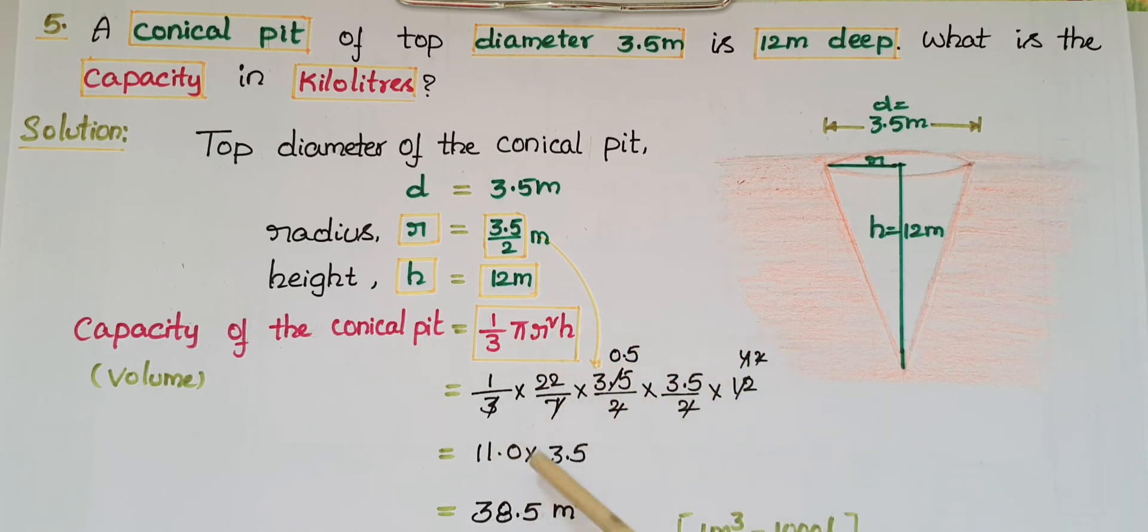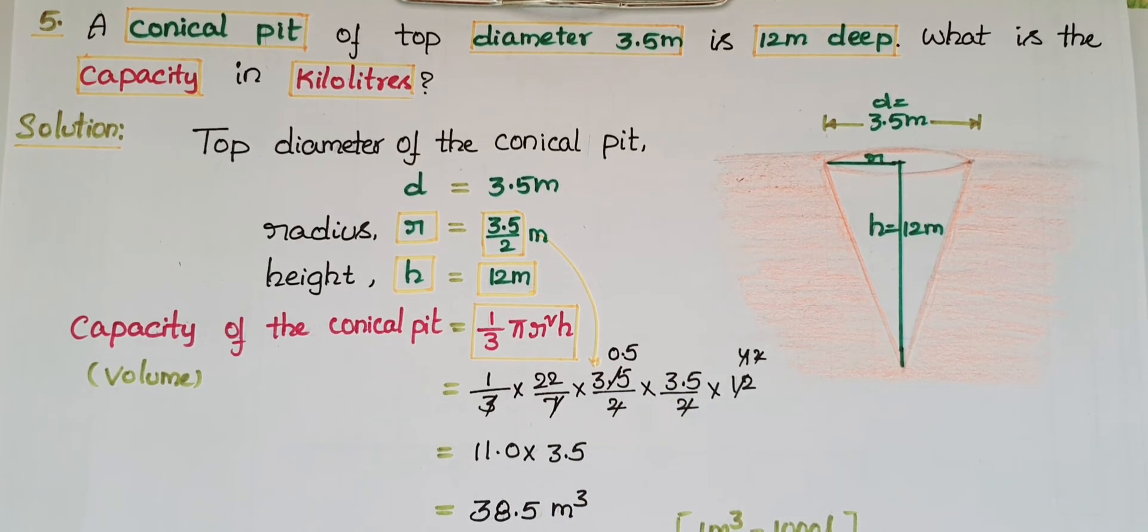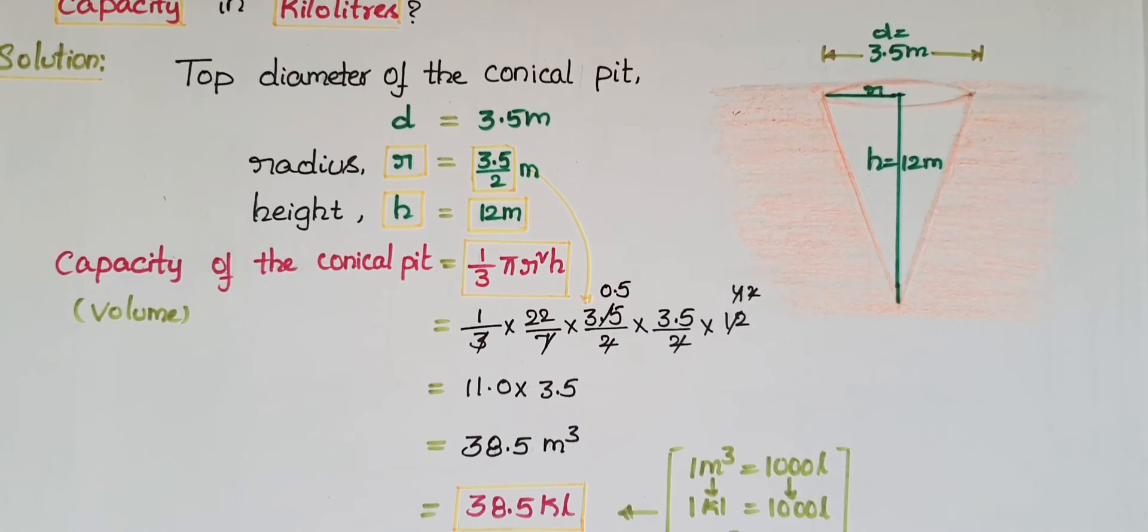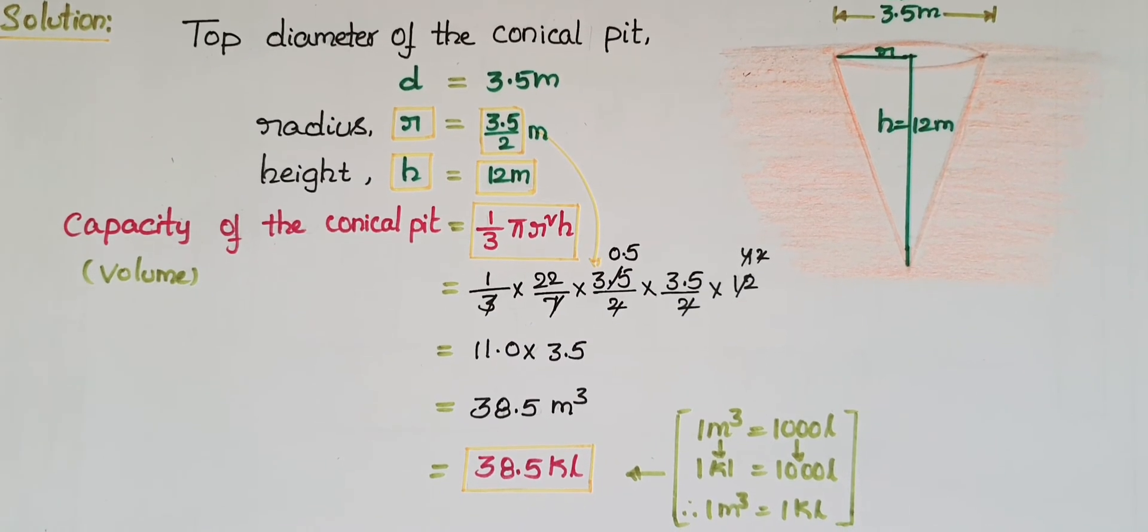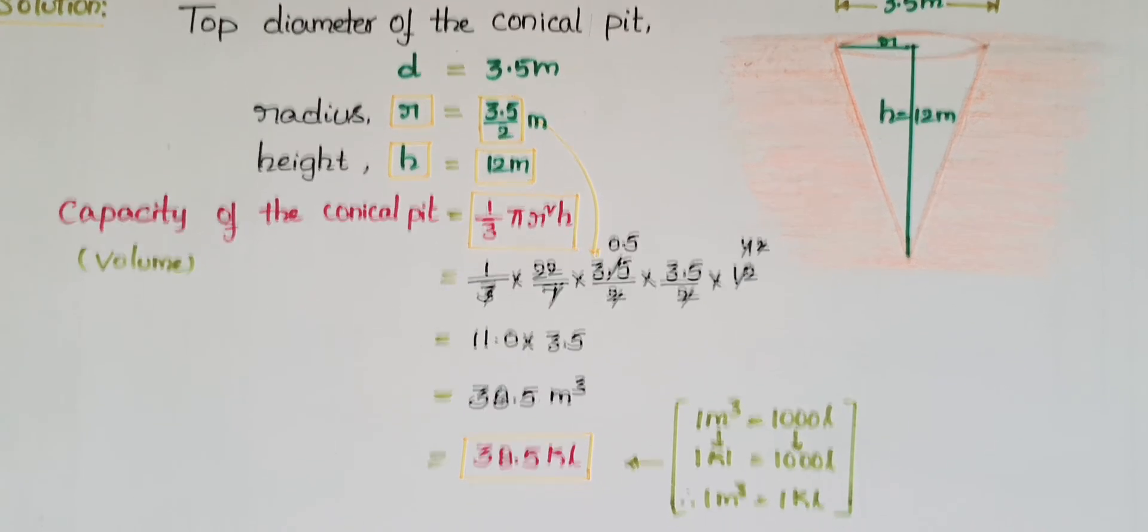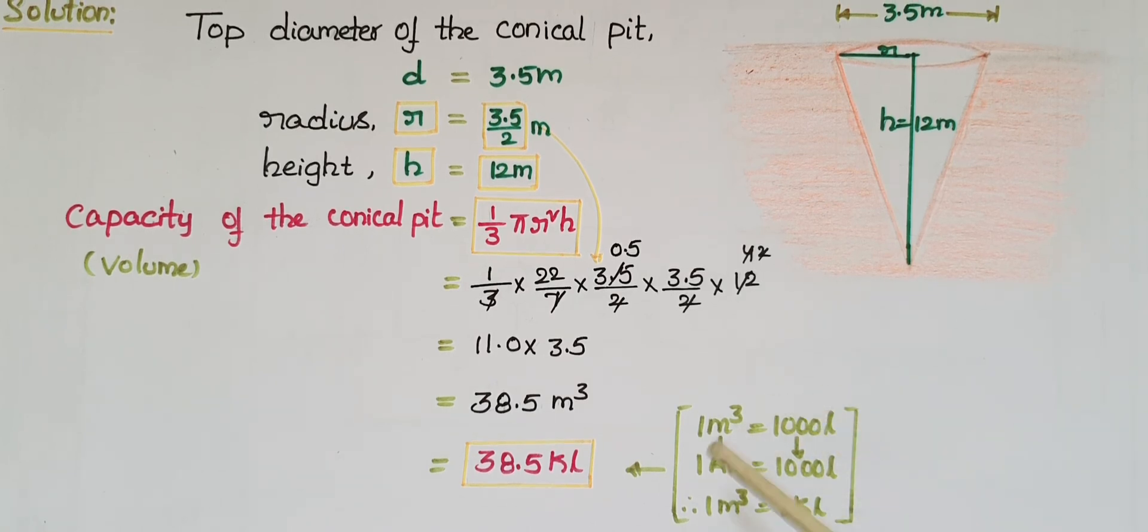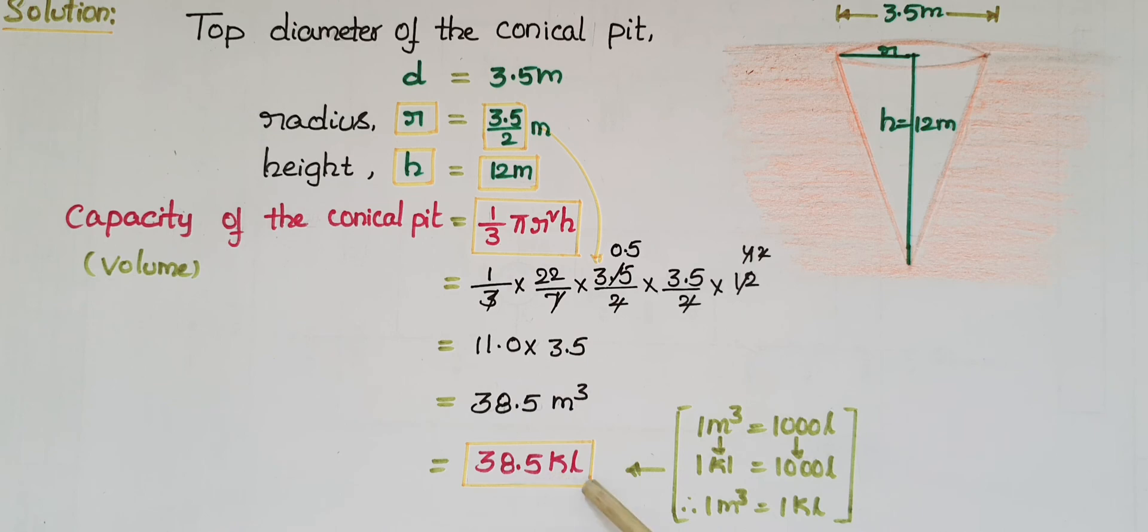So we get 38.5 meter cube. Now we need to find capacity in kiloliters. Since 1 m³ = 1000 liters and 1 kiloliter = 1000 liters, therefore 1 m³ = 1 kiloliter. So the capacity of the conical pit is 38.5 kiloliters.